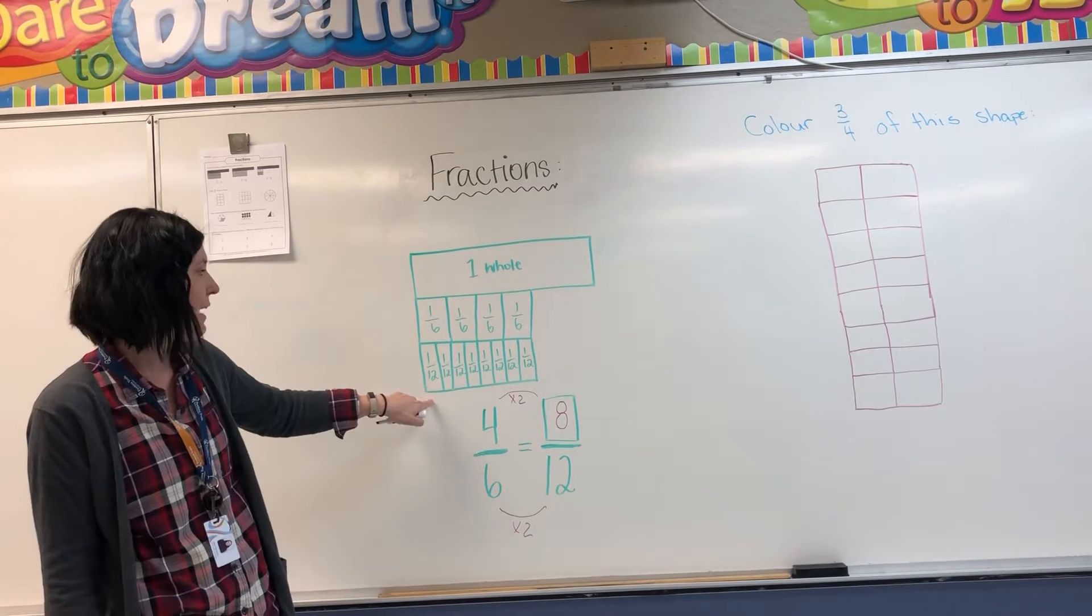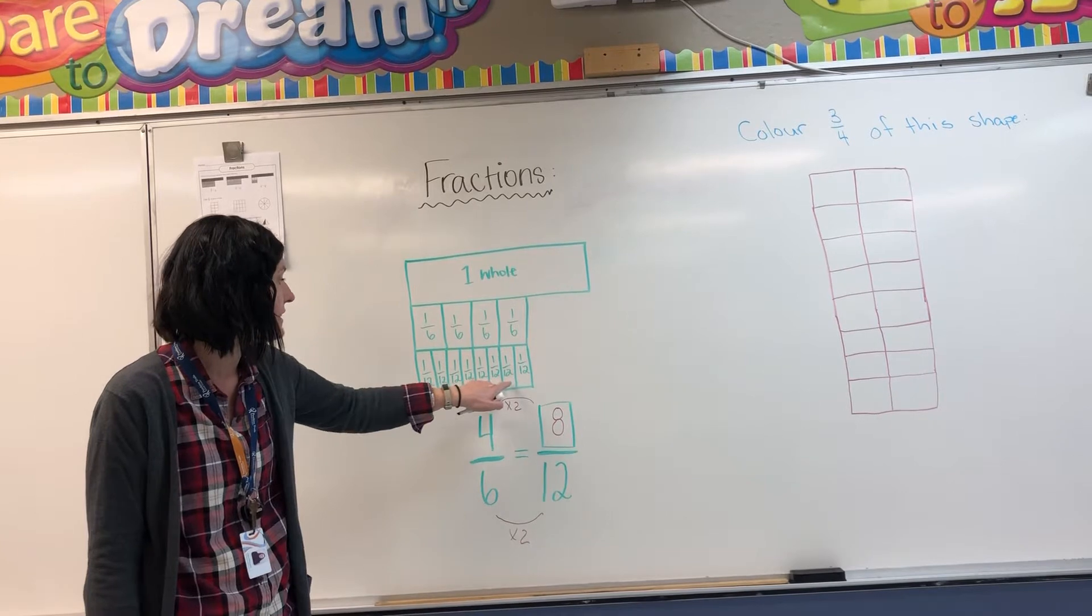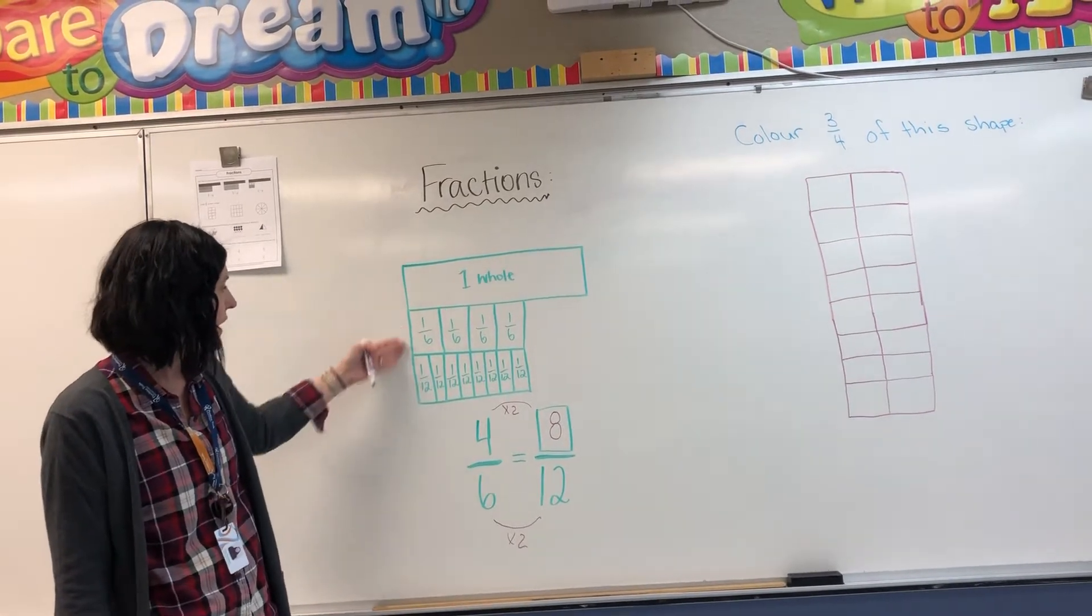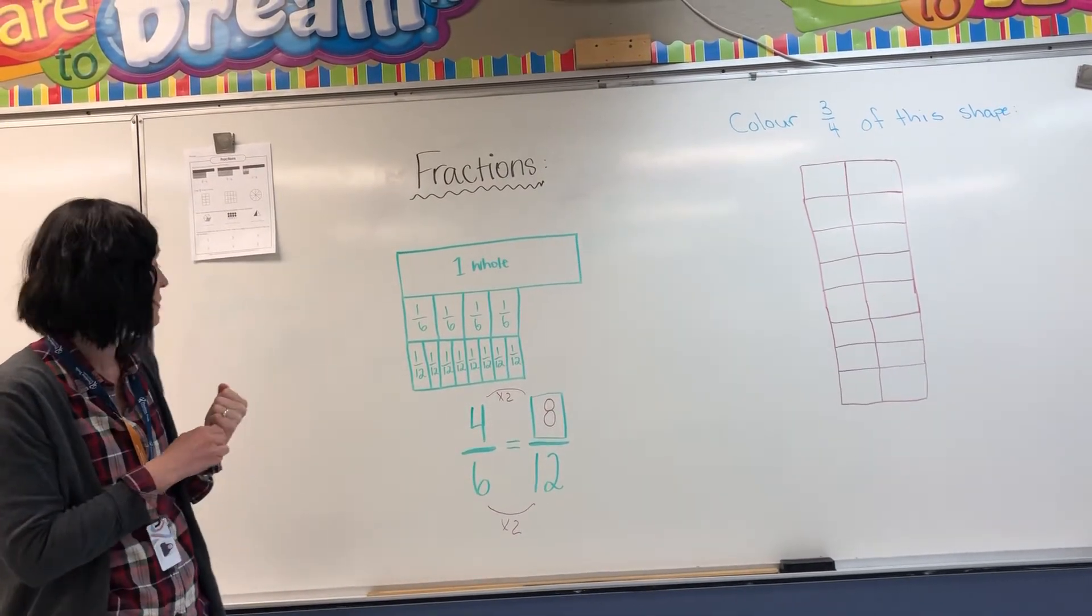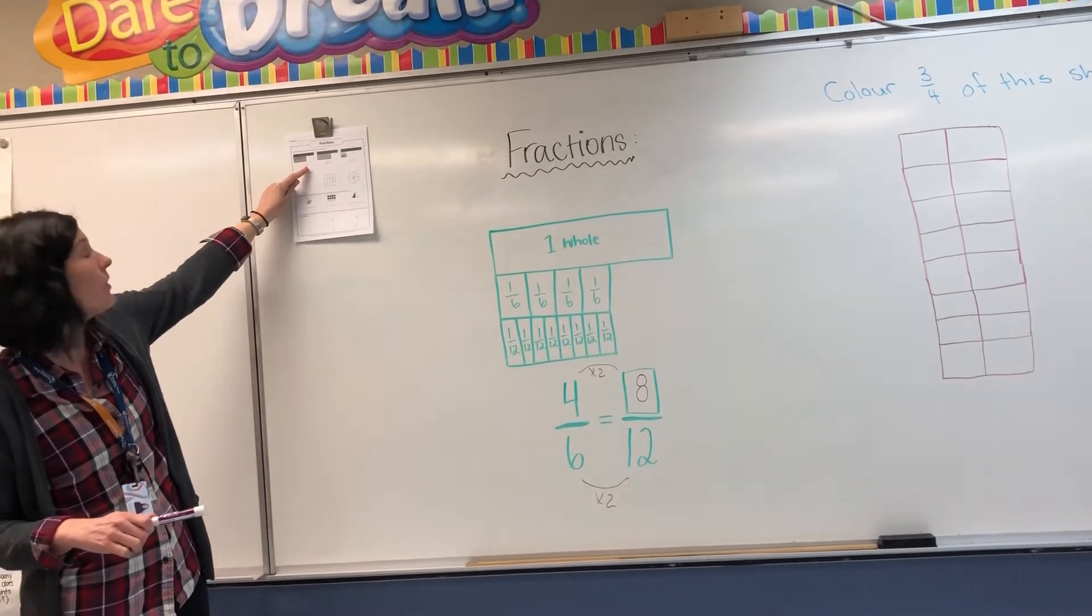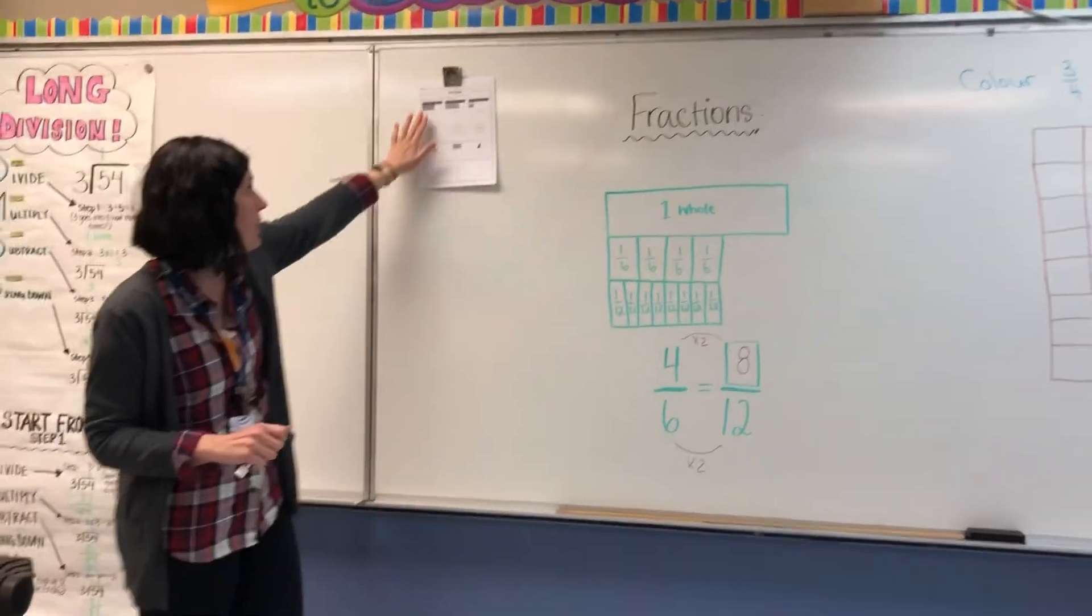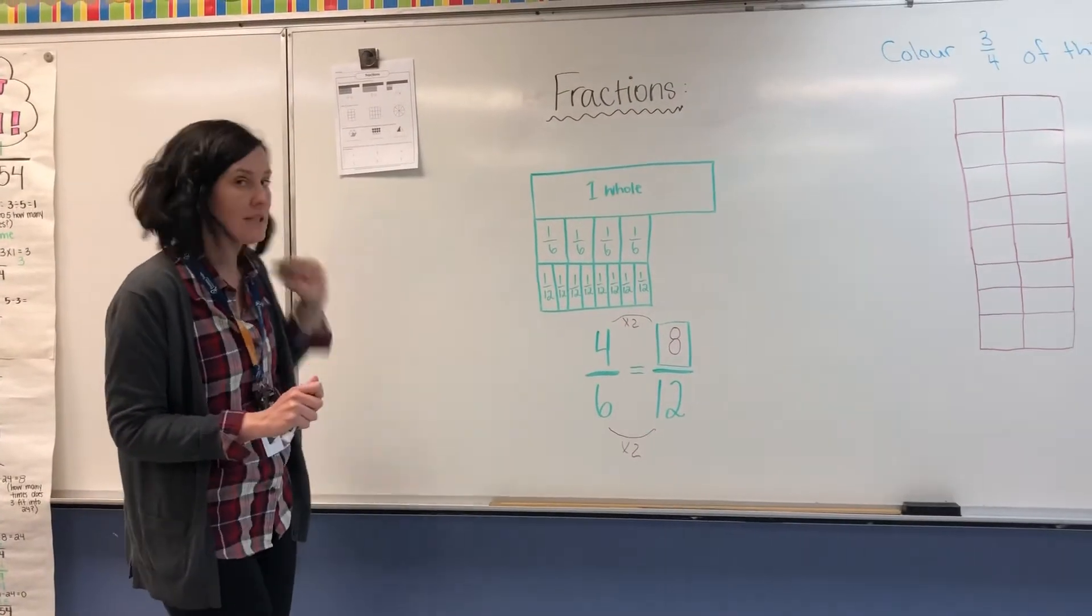Let's go back and count this. Let's see if that's true. One, two, three, four, five, six, seven, eight. Eight twelfths. So there we go. We've got two ways to figure out what our equivalent fraction would be. You've got three chances here. I would encourage you to do the math first and then check your work by counting the sections. That would be my best way to do that.